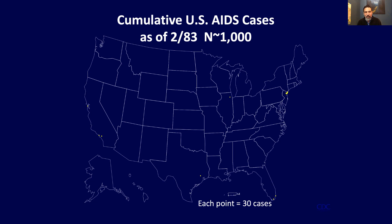This is a map showing some of the early cases of AIDS presenting in February 1983. You can see yellow dots showing up most notably in New York and California, but also a few other places around the country. It was really important to institute surveillance for AIDS, to understand the geographic extent of this disease that appeared to be growing, how many people were affected, and what the epidemiology looked like.